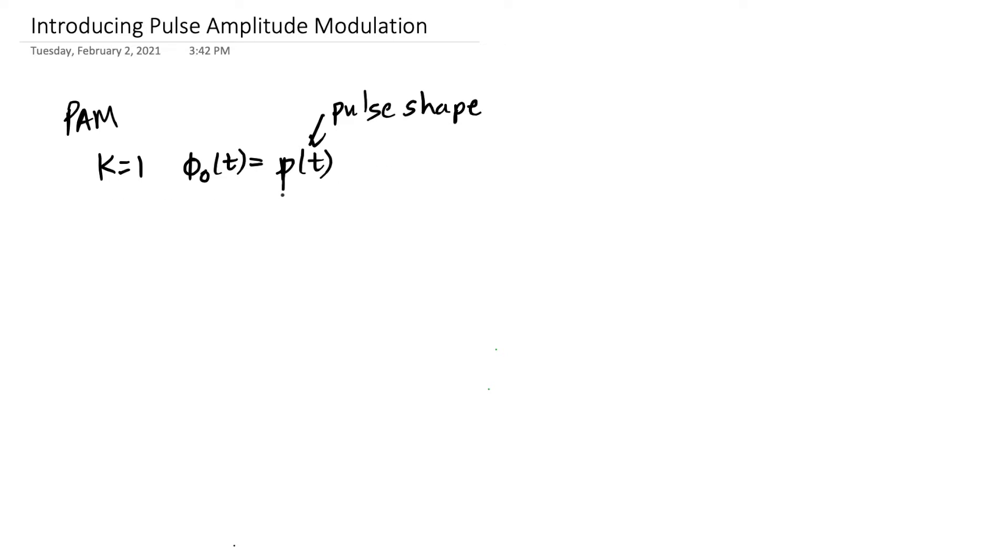Because we only have one orthogonal waveform, all of our symbols, no matter what m is, are just scaled versions of P of T, that is some amplitude multiplied by P of T, and that's where pulse amplitude modulation gets its name.